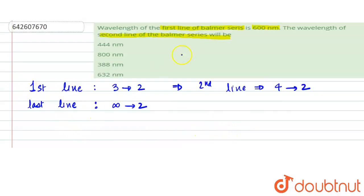We are given that the first line of the Balmer series is 600 nanometer. We know the wavelength during the transition of the electron from one excited level to the other is given by the relation: 1/λ = Rz²[1/n₁² - 1/n₂²].